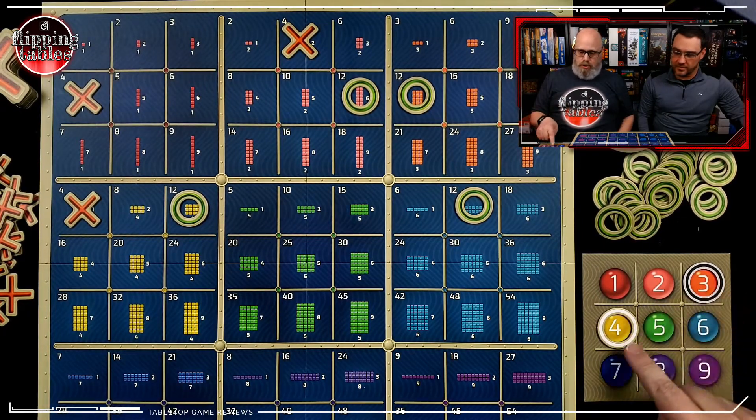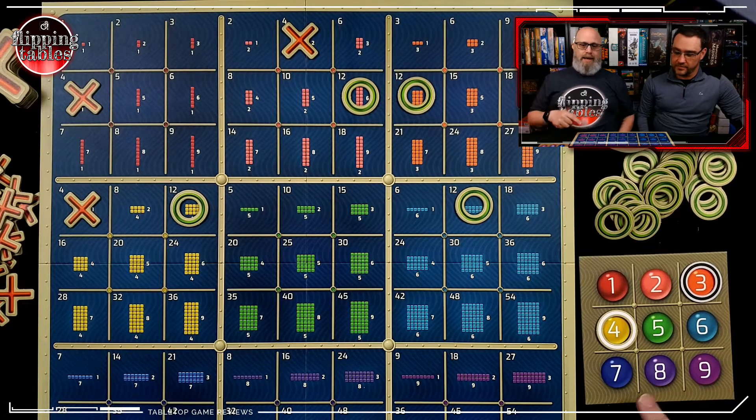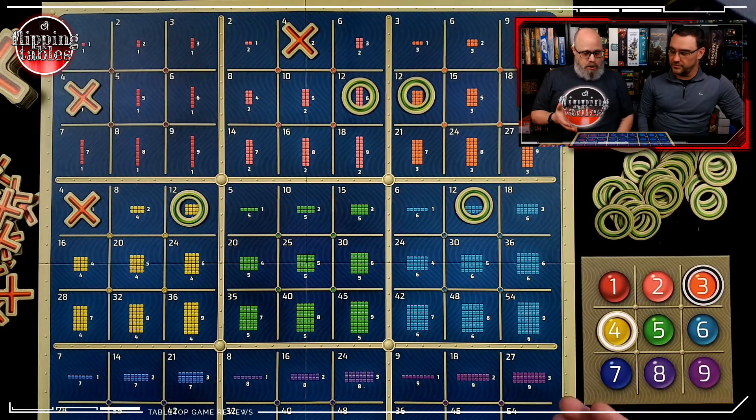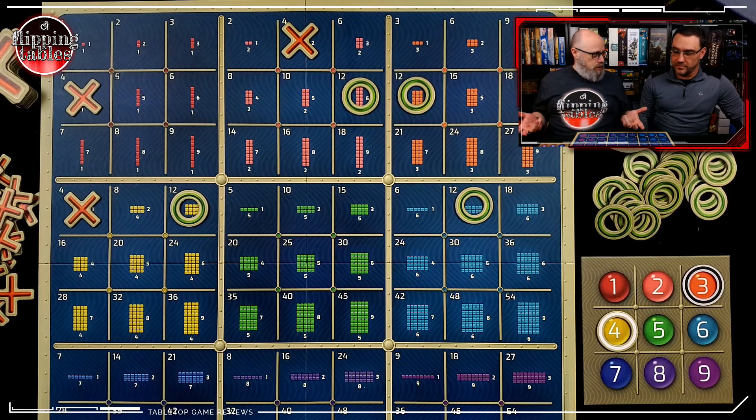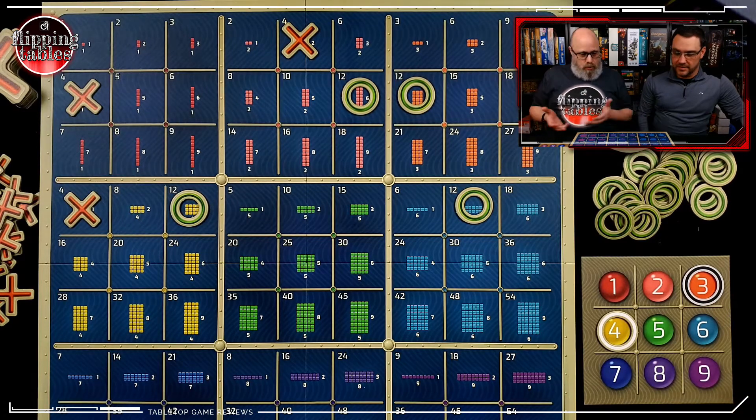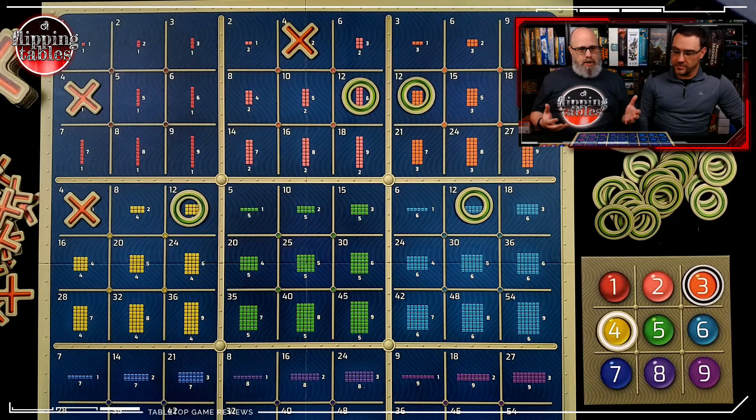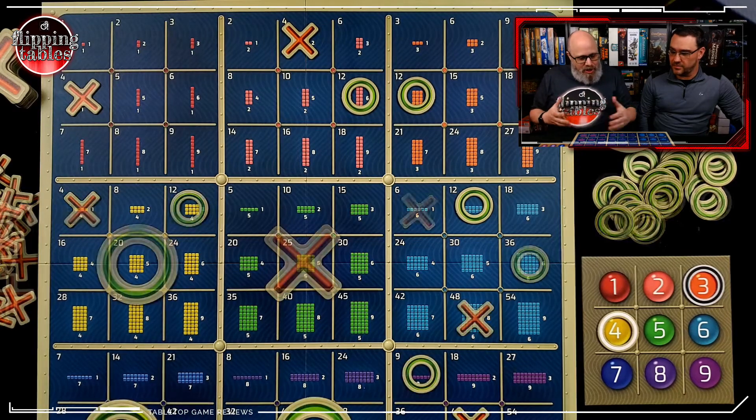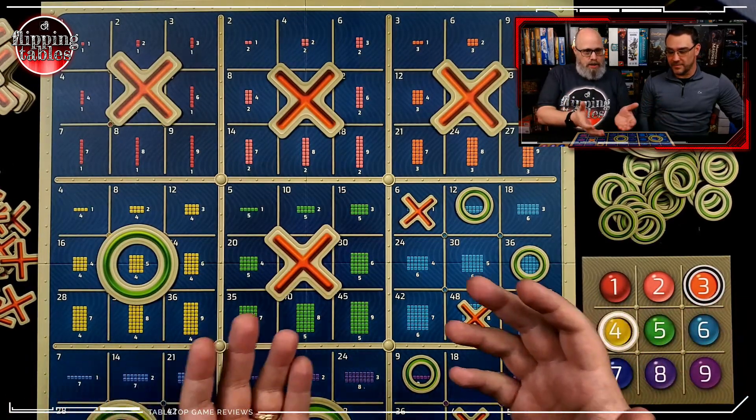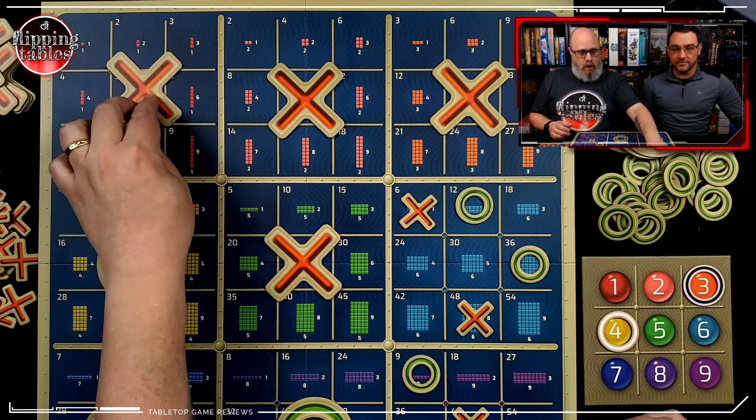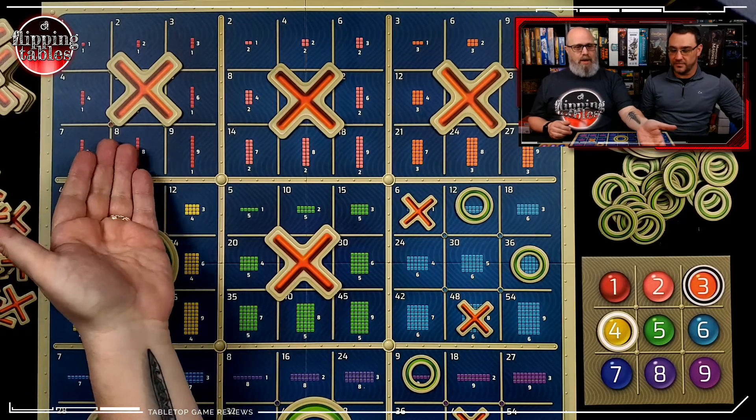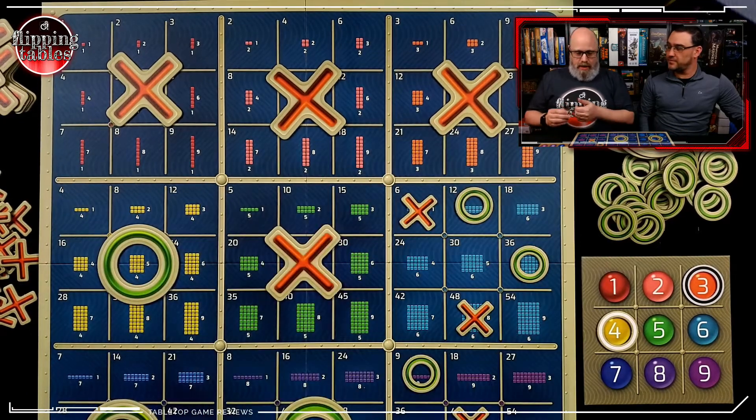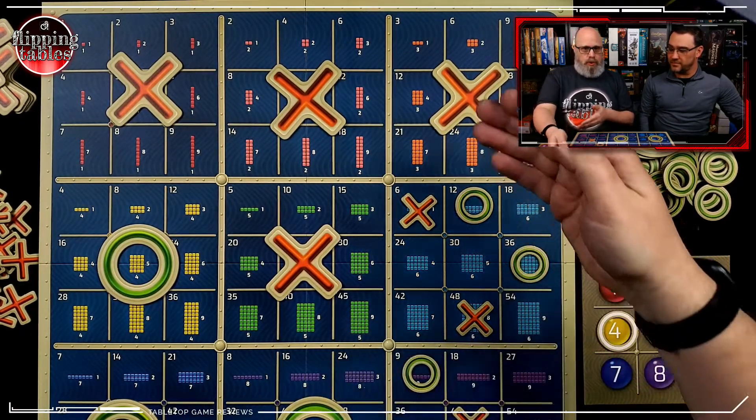So you essentially go back and forth until the game looks sort of like this. In this case, Tico was able to get all three along the top. He actually won the entire game by winning each of these three quadrants. As you win that quadrant, it gets replaced with a larger version of your symbol.